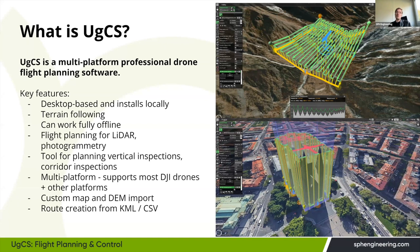Many pilots choose UgCS for its terrain following, which can use the default SRTM4 elevation data or your own digital elevation or digital surface models. We have a range of flight planning tools including lidar, photogrammetry, vertical inspections, and of course corridor missions, which is the main topic of today's webinar.